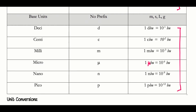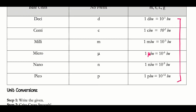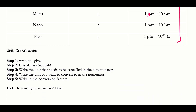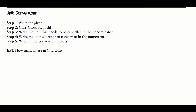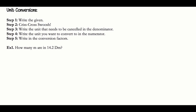The good news is you don't need to memorize these — I will always give you the relationship. Let's look at some unit conversions and use these relationships as we go. Here are the steps for unit conversion. Step one: write your given. For our example — how many meters are in 14.2 decameters? — my given is 14.2 decameters.